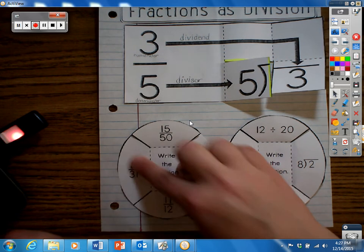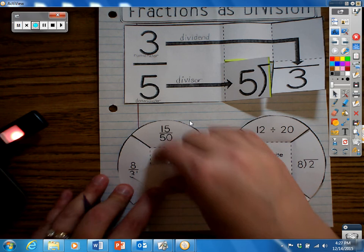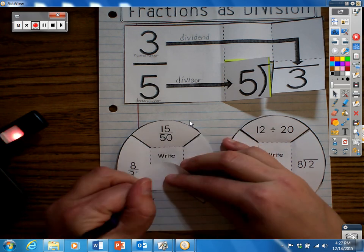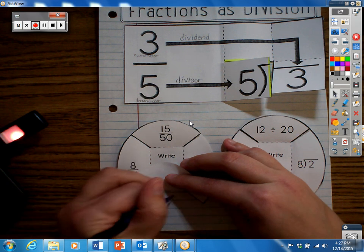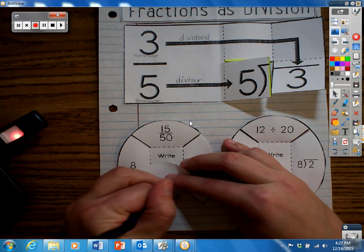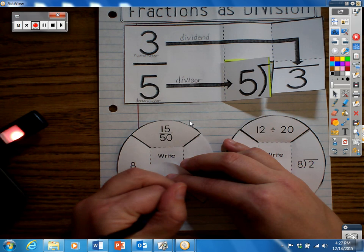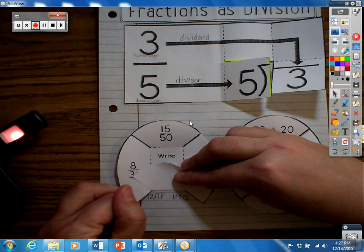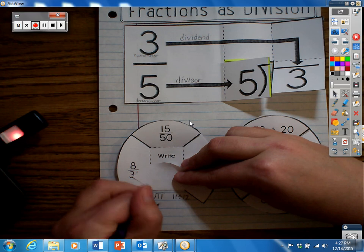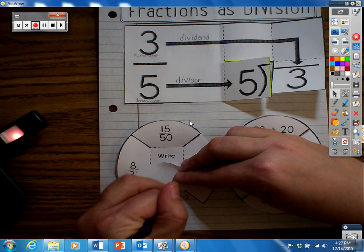Okay, then we'll go down to 11 twelfths. And again, the 11 goes inside the division problem and the 12 goes on the outside. We can also read this as 11 divided by 12, and then in word form, 11 divided by 12.